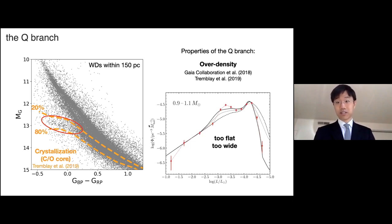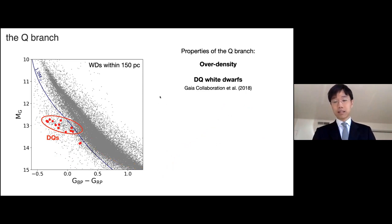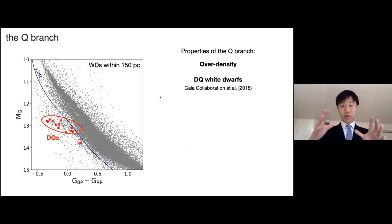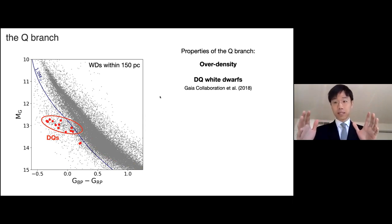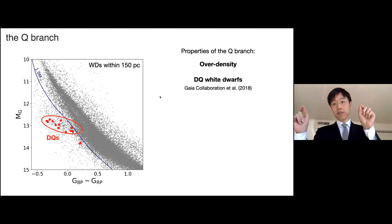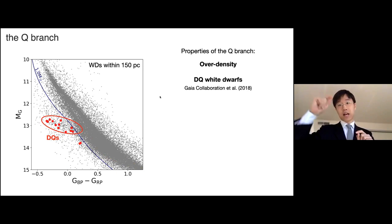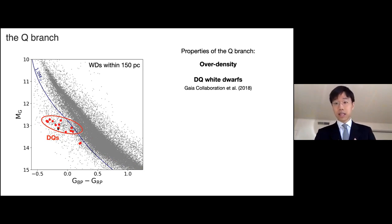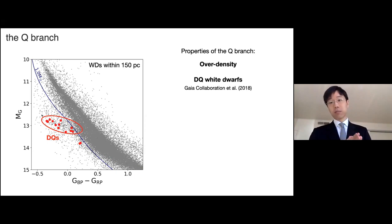Crystallization is very hard to explain the narrowness of this branch. Also, at the beginning when the Gaia team released the result, they noticed that DQ white dwarfs are concentrated on the branch. DQ white dwarfs have some amount of carbon visible as carbon lines in the atmosphere. Since white dwarfs have a large carbon-oxygen core with a thin helium layer and perhaps a thin hydrogen layer, we need to dredge up the carbon from below the helium layer. The question is why these DQ white dwarfs exist and why they're concentrated on the branch — their number density enhancement is much higher than the overall factor of two.